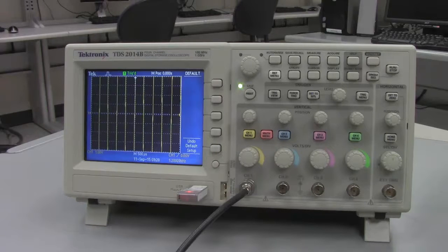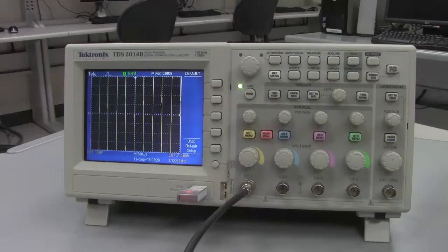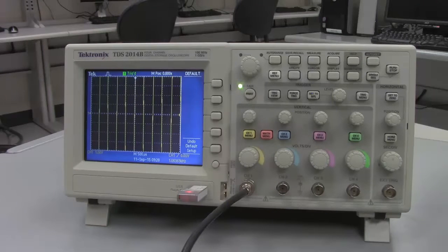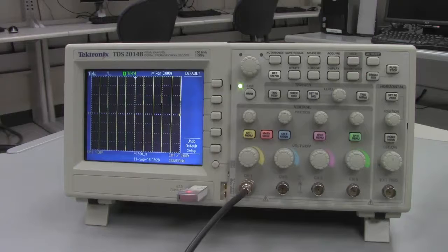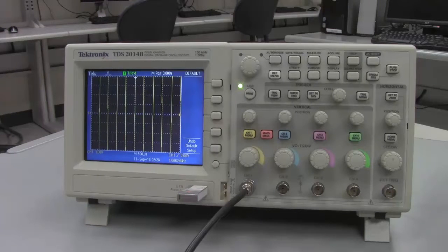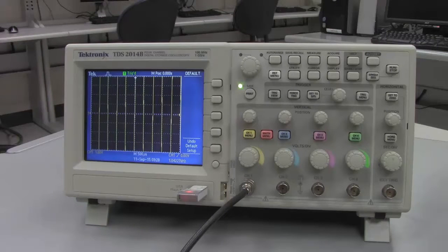When it comes up in the default setting, it's assuming that it has a 10x probe. Now a probe is another fancy name for a wire. A probe is something that you can use to connect to your circuit. A 10x probe takes the voltage that it's reading and divides it by a factor of 10, so that the things we would be looking at here would be 10 times as big as they really are.